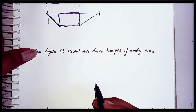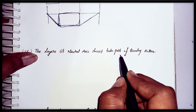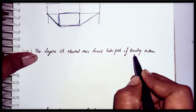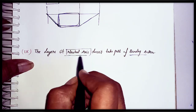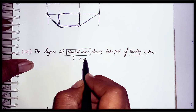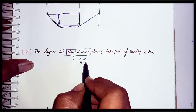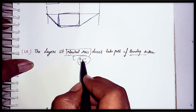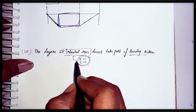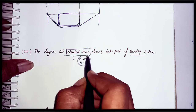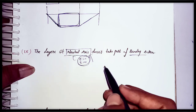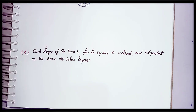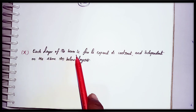The next assumption is that the layers at the neutral axis do not take part in bending. The neutral axis is the axis where stress is zero and strain is zero. When stress and strain are both zero, that axis is called the neutral axis, and the corresponding plane is called the neutral plane.